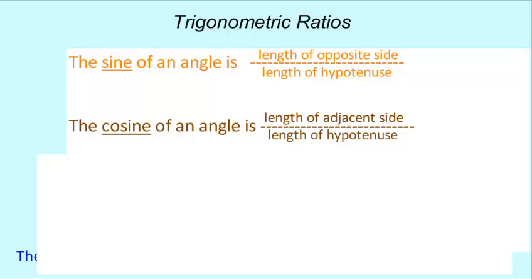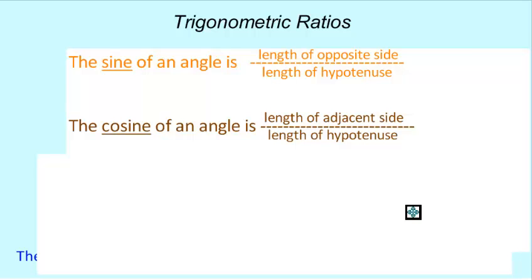So we've gotten one ratio that uses opposite and hypotenuse with the adjacent sitting out. We've got another ratio that uses adjacent and hypotenuse with the opposite sitting out. So now let's take the two things that have sat out and make a ratio out of that.